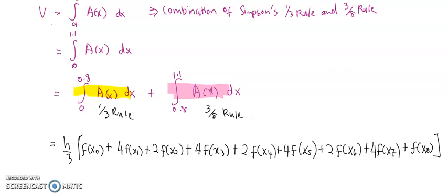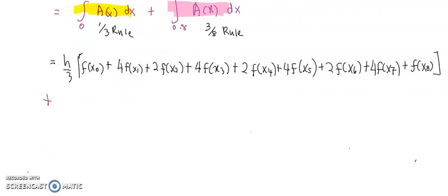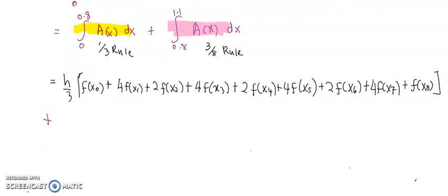Next, you need to add the second integration from x = 0.8 to x = 1.1. For the second integration, use Simpson's 3/8 rule. The formula is 3h/8 times [f(x8) + 3f(x9) + 3f(x10) + f(x11)].